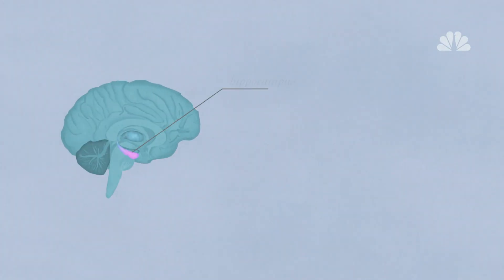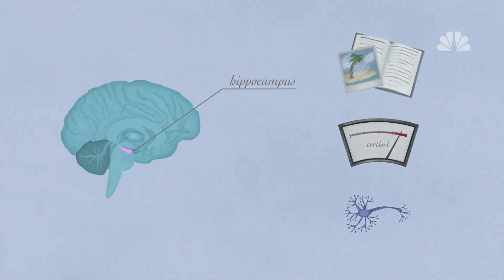The second area is the hippocampus, which processes memory and regulates stress hormones such as cortisol. One study found it's up to 13% smaller in depressed women, and excess cortisol can stunt the growth of new neurons, creating poor moods and memory.